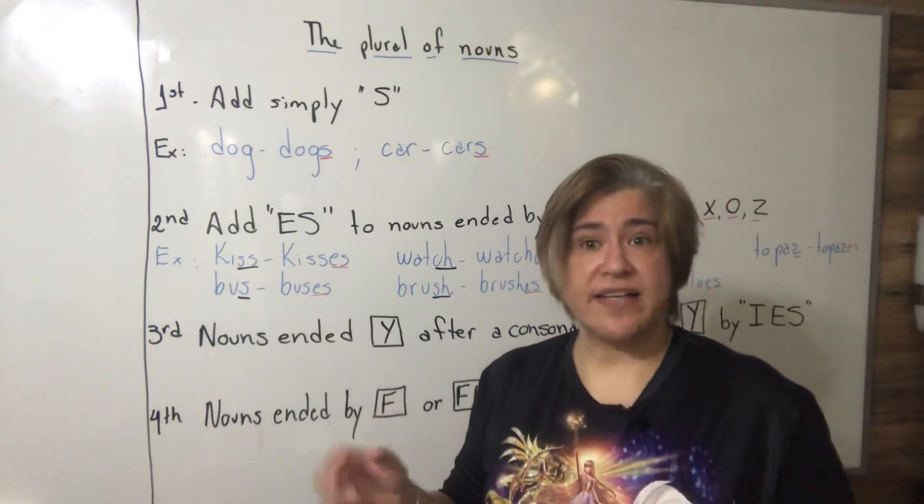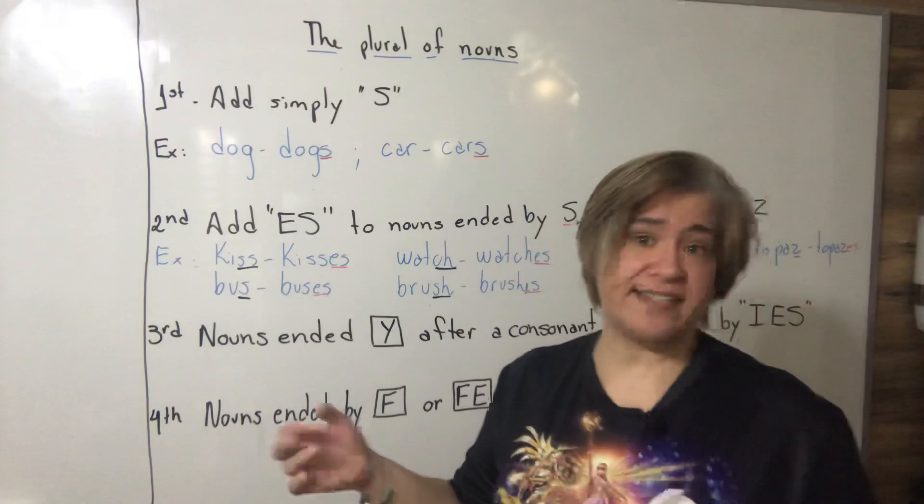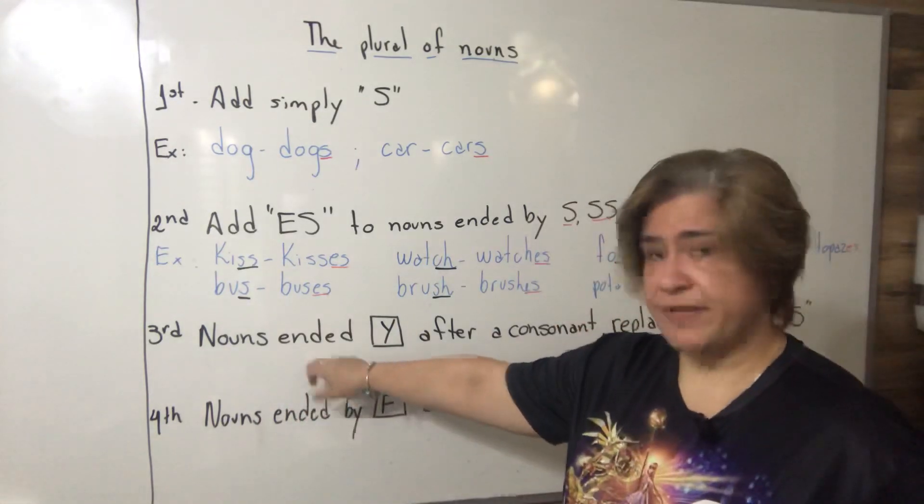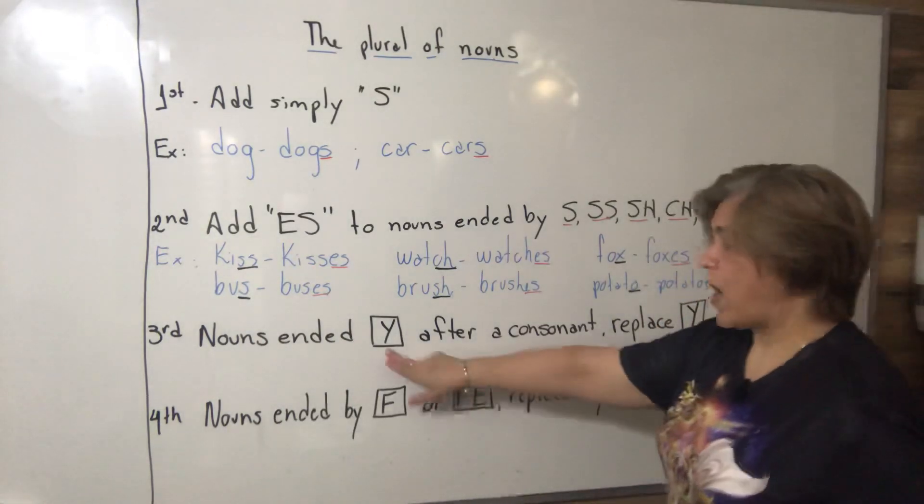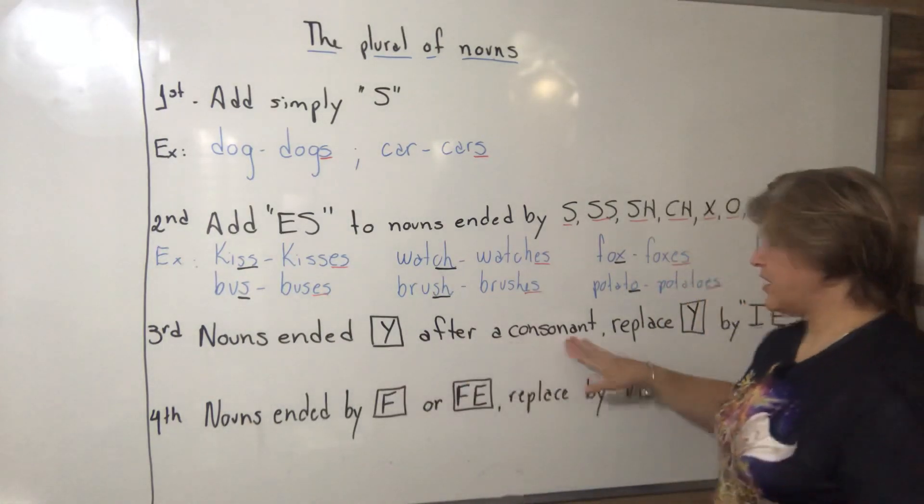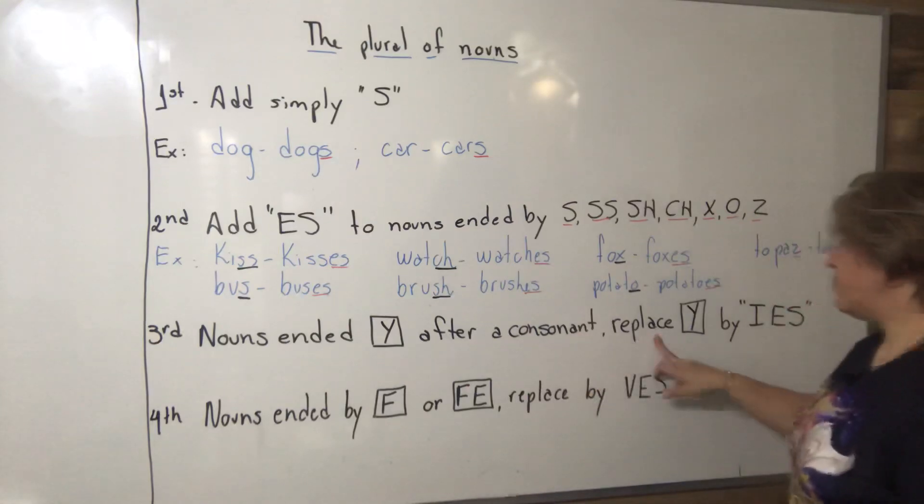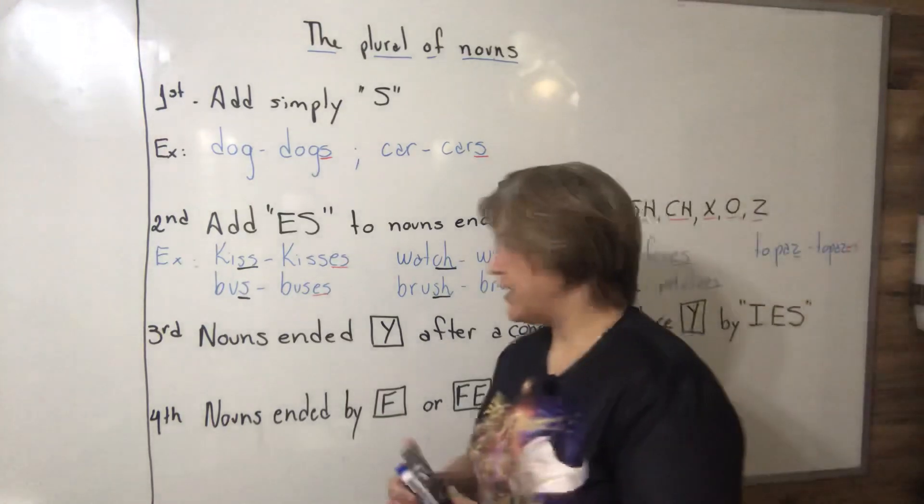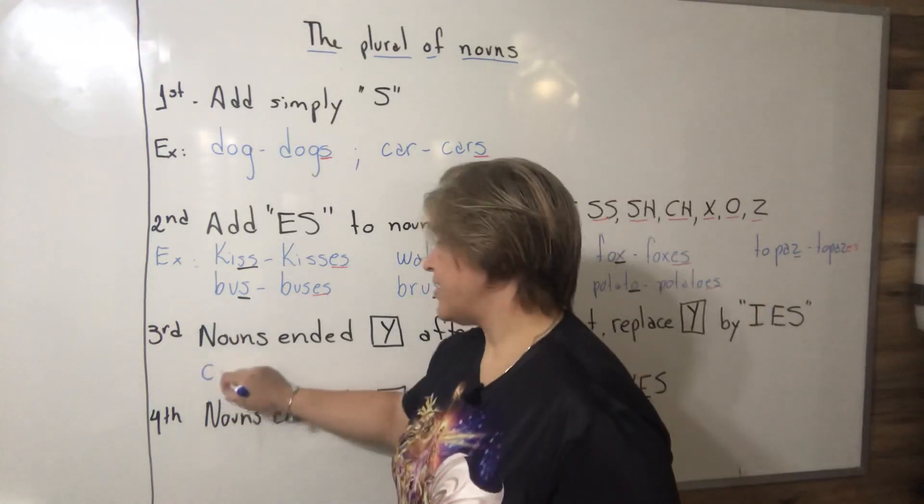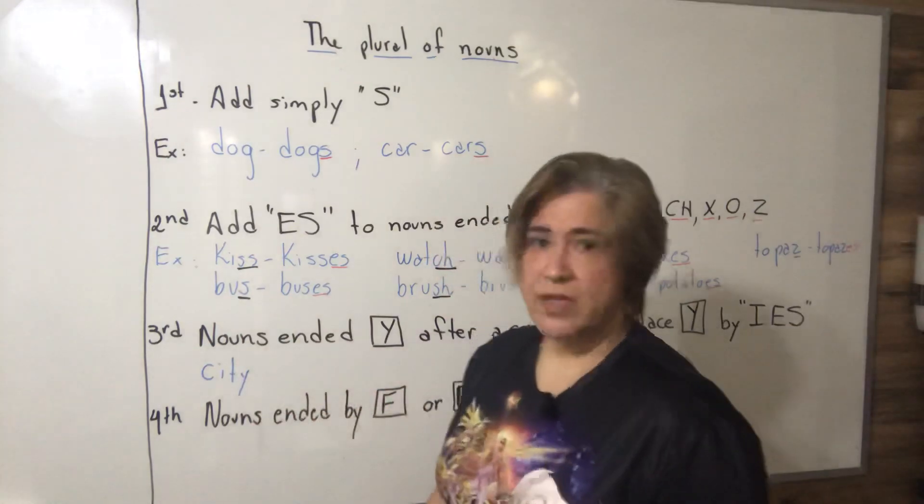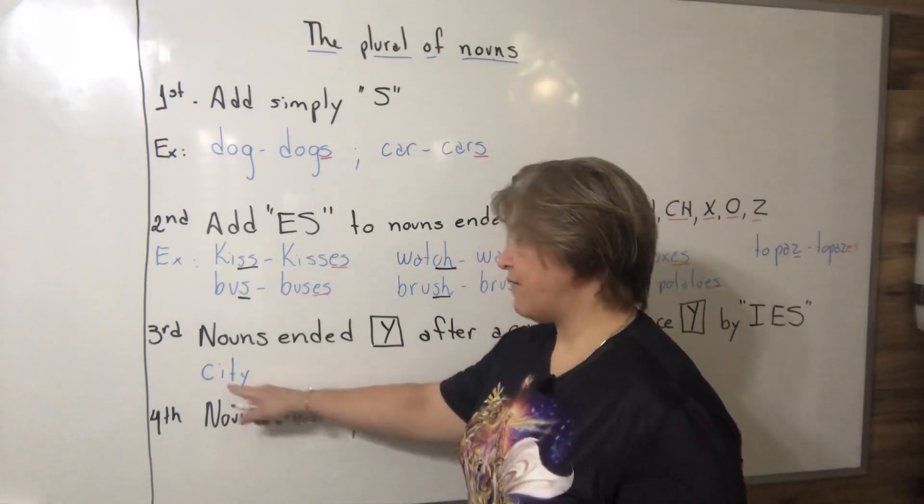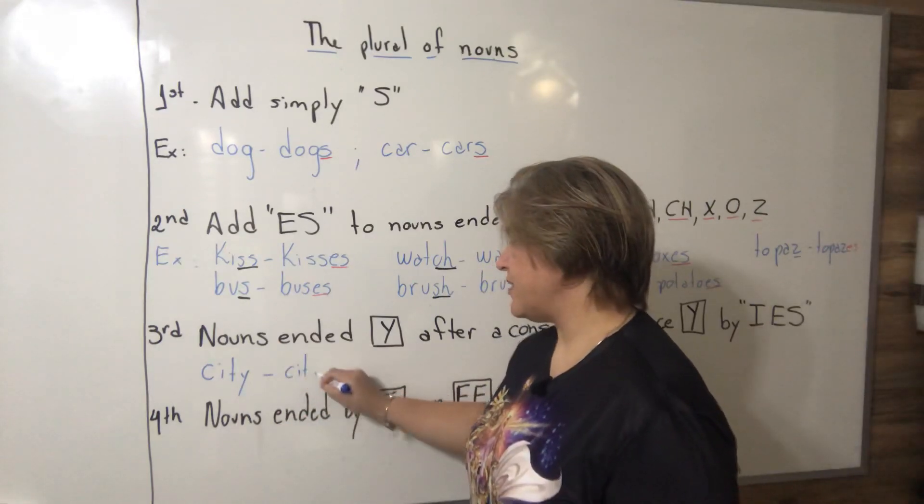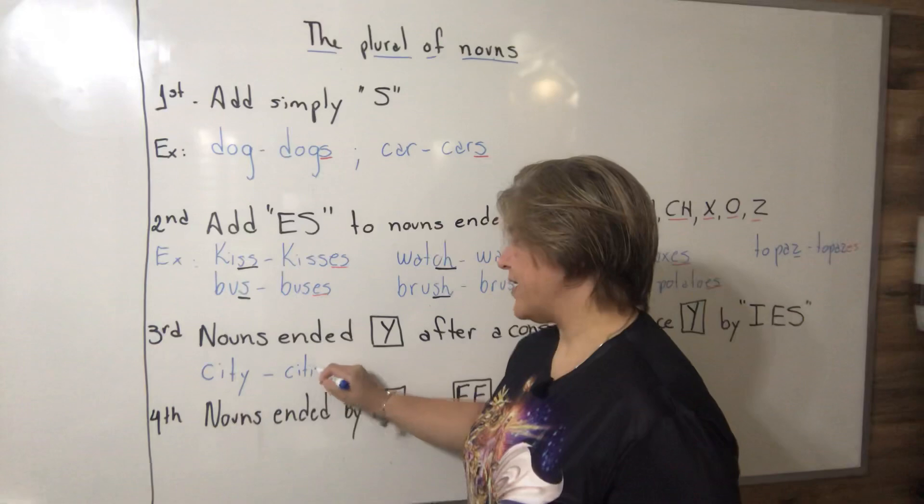Rule number three: nouns ended by Y after a consonant, replace Y by IES. Let's go for an example. We have here city, ended by Y after a consonant, so you replace Y by IES.